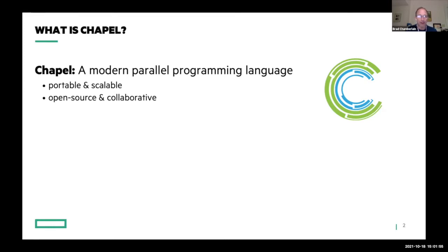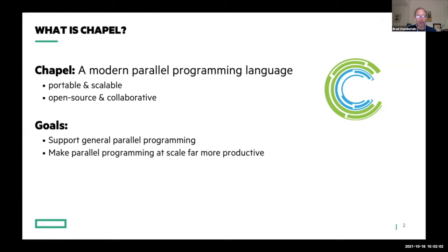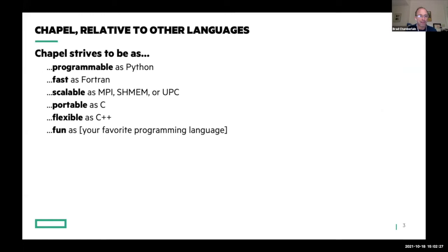The two high-level goals of Chapel are: to support general parallel programming — if you have some parallel algorithm and some parallel hardware, you ought to be able to do that in Chapel — and the second is to make parallel programming at scale far more productive than it is today, trying to get beyond the MPI-plus-X world that a lot of the HPC community relies on.